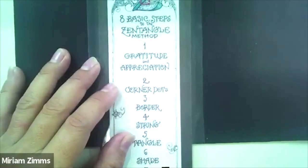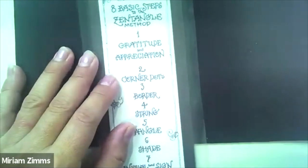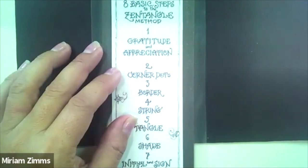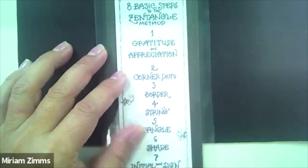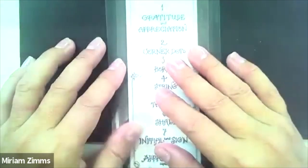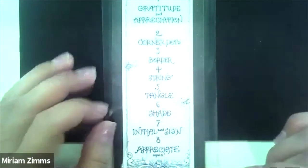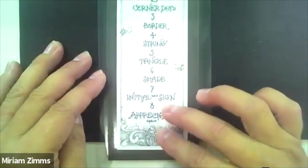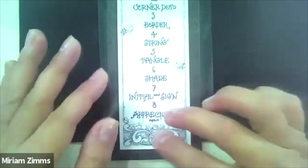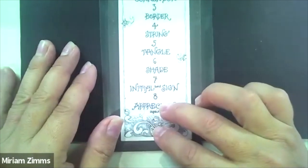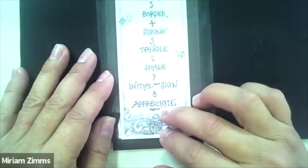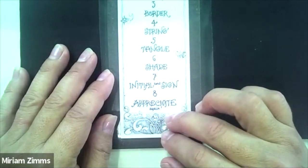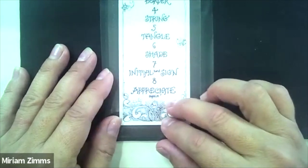Let's talk about the eight basic steps. First, there's gratitude and appreciation. Second, we'll be doing corner dots. Third, we'll create a border, a string, tangle or tangles which are the actual patterns. Then we'll do some shading with pencil. We'll initial and sign because we are all artists and creators. And then we'll appreciate at the end.